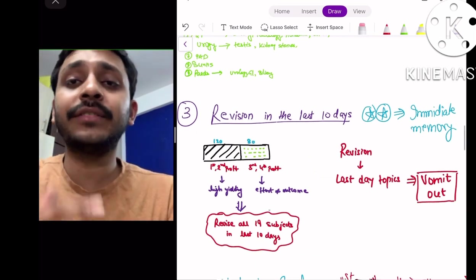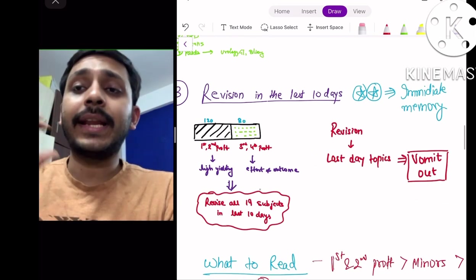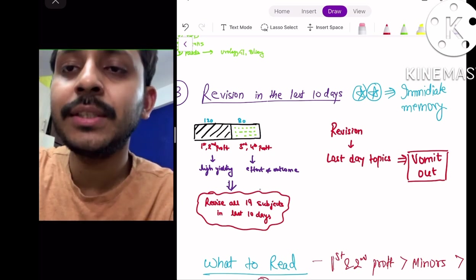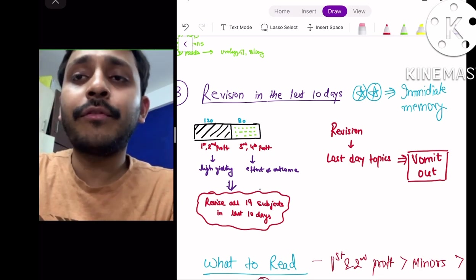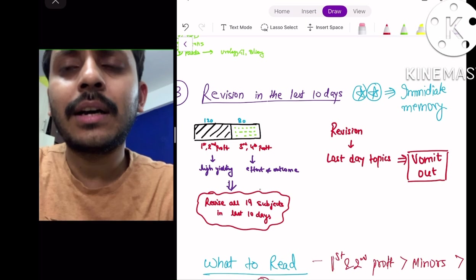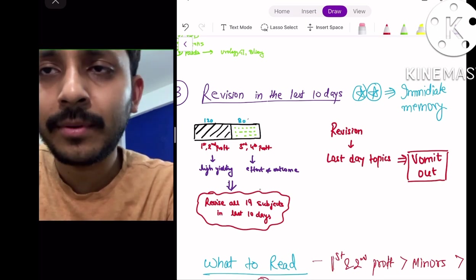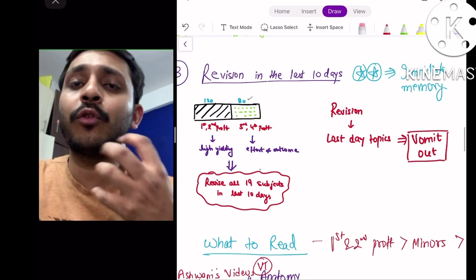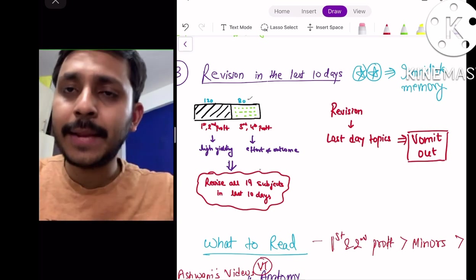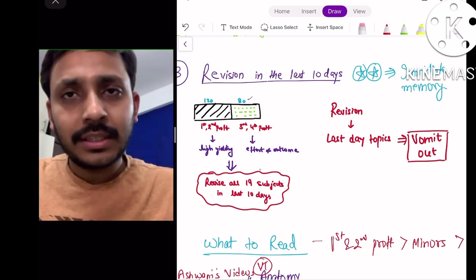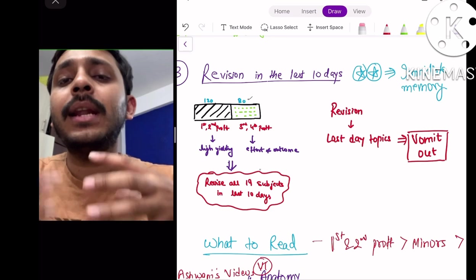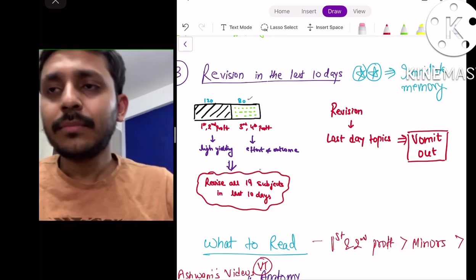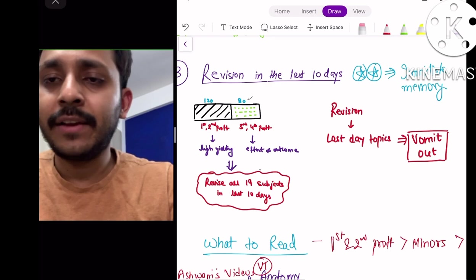As I have said in the previous video as well, for INI-CET the 1st and 2nd prof form a major portion of your questions, and the final 3rd and 4th prof forms around less than 40% - only around 80 questions come from the 3rd and final prof. Hence you should focus more on the 1st and 2nd prof during this time because their subject is limited, the knowledge is limited, and that is more high yielding. Just revise in the last 10 days and vomit it out on the day of the examination.